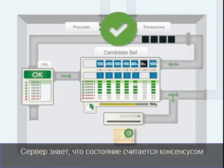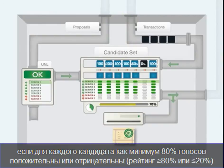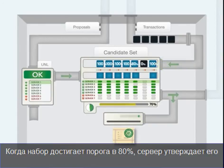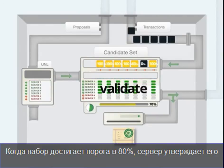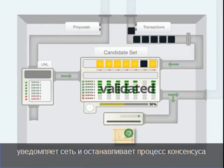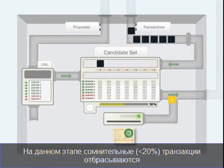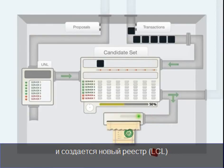A server knows the network has consensus when 80% of the votes for every transaction in a proposal are either yes or no — this is the threshold for mathematical certainty. When a proposal hits the 80% threshold, the server validates the proposal, alerts the network, and closes its consensus process. This validated proposal is then applied to the last-closed ledger, any invalid transactions are discarded, and a new last-closed ledger is created.